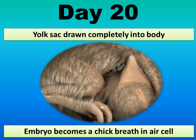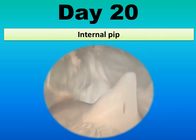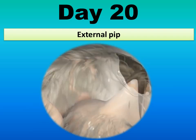On day twenty, the yolk sac draws completely into the body, the embryo becomes a chick and breathes in the air cell. Internal pipping occurs, and after breaking the egg shell, external pipping will occur.